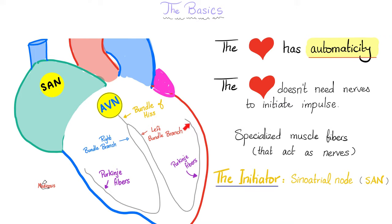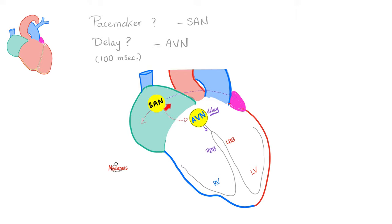Why is there a delay at the AV node? To allow the ventricles to fill during diastole and to allow the coronary arteries to fill during diastole. The AV nodal delay is significant — without it, you would die. After waiting in the AV node — the AV nodal delay — the impulse travels to the bundle of His, then the right and left bundle branches. Who is the pacemaker of the heart? The SA node. Where is the delay? In the AV node.